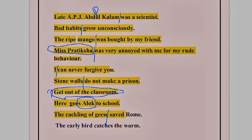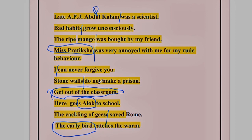The last sentence: 'The early bird catches the worm.' We are talking about a bird, so 'the early bird' becomes the subject, and 'catches the worm' becomes the predicate. So we have done 10 sentences on subject and predicate. Please write in the comment section how much you have scored. I think this part is clear. Thank you so much everybody. Bye-bye.